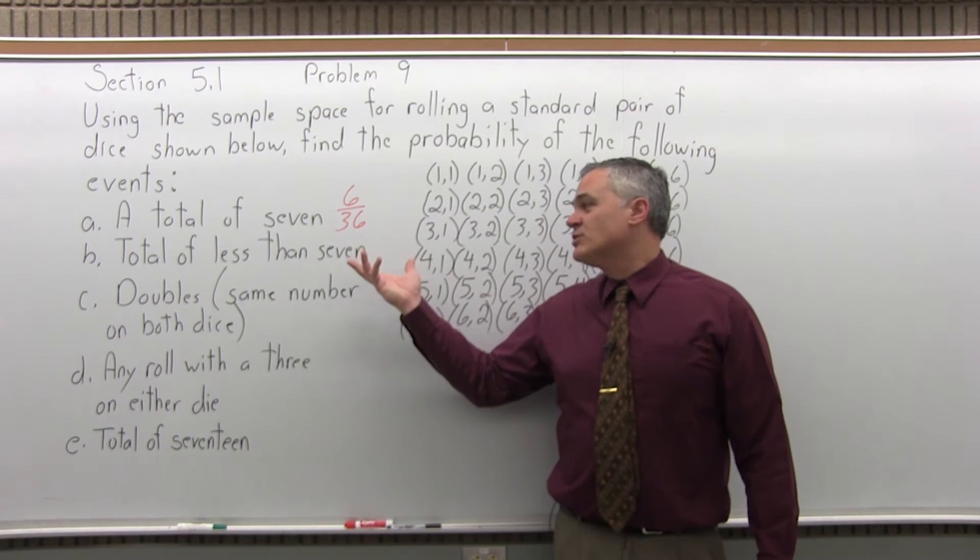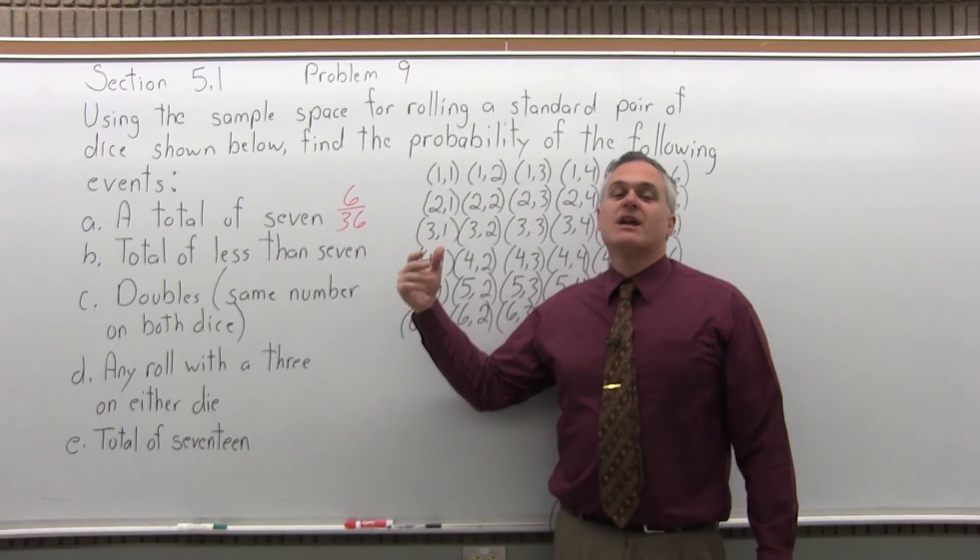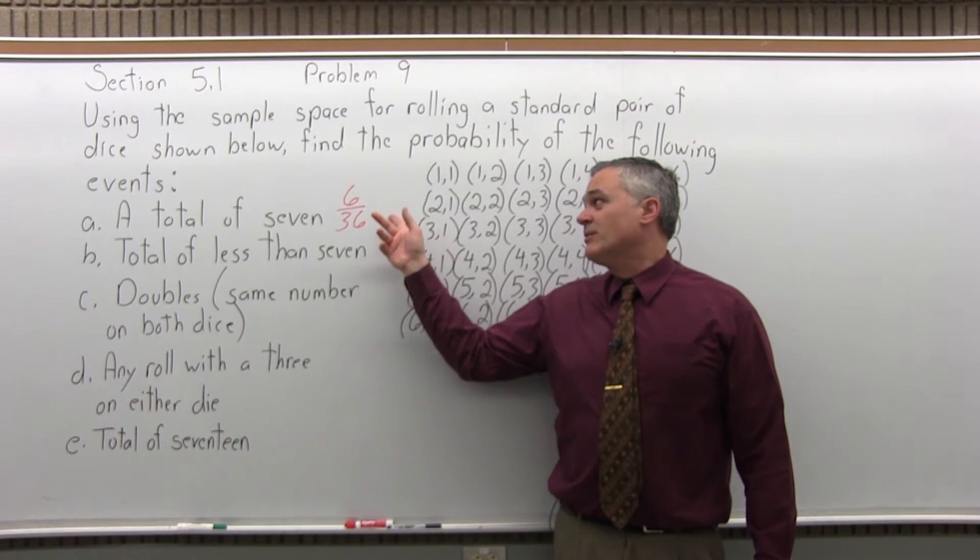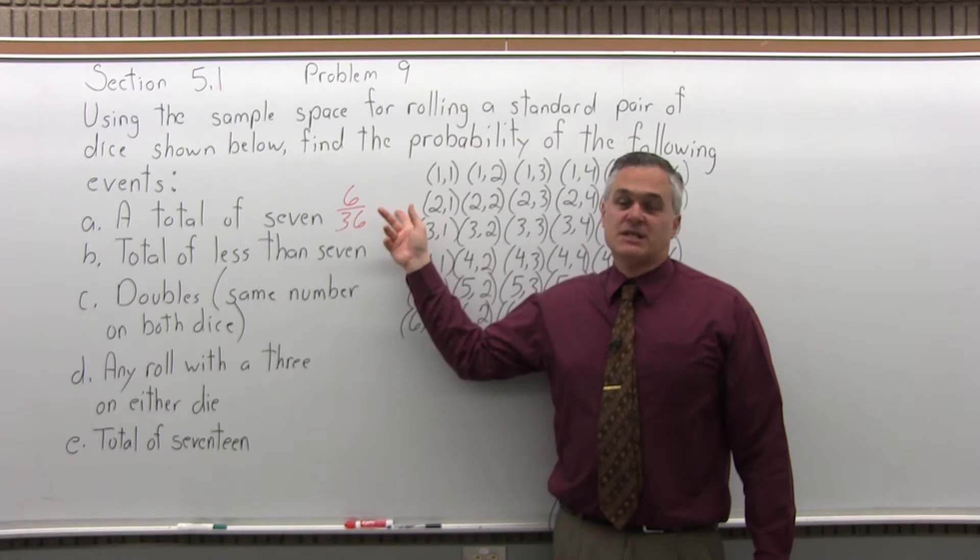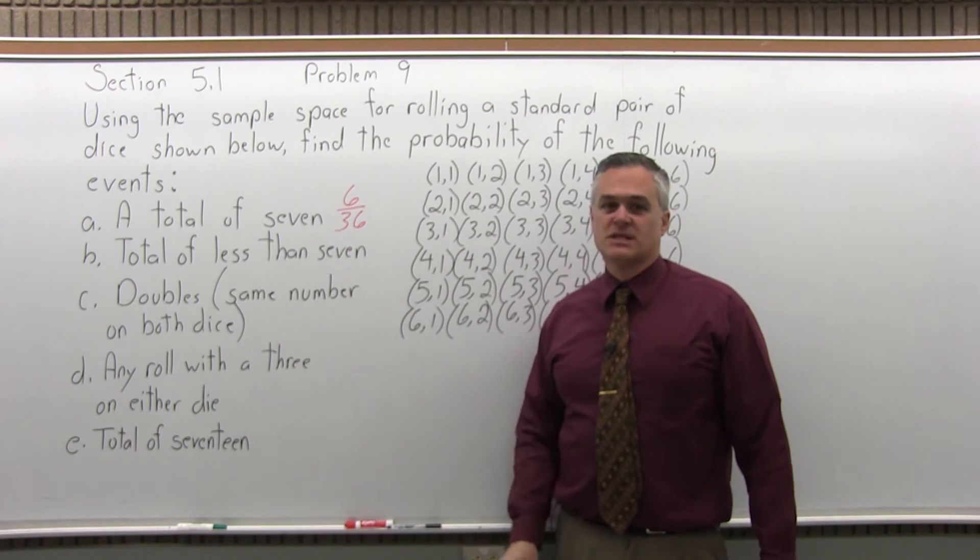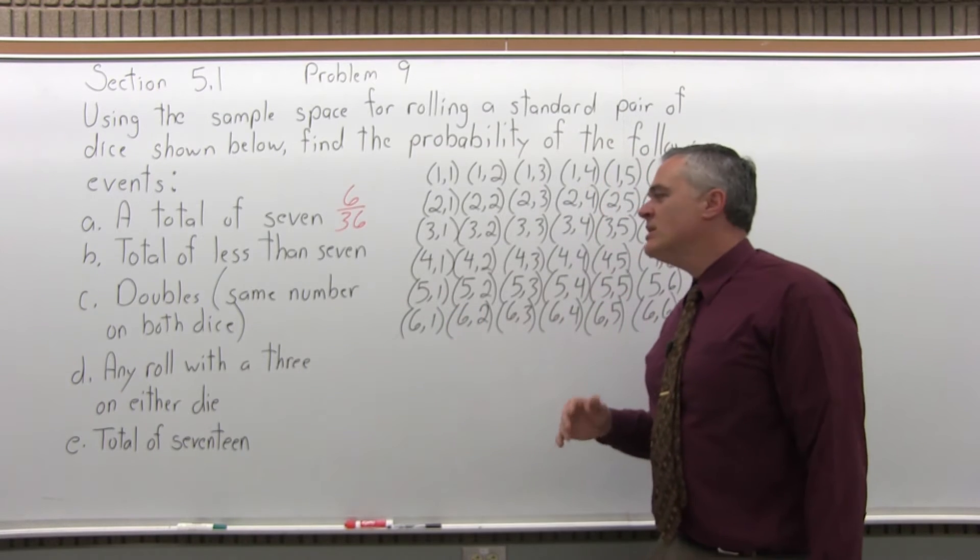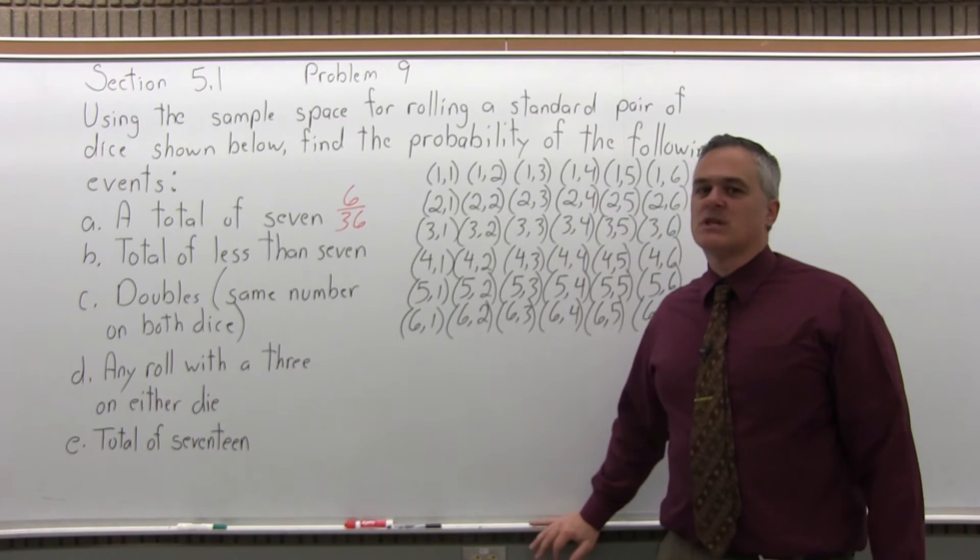And again, that 6 over 36 can be reduced to 1 over 6. It can be turned into a decimal by dividing 1 divided by 6 or 6 divided by 36, same result. It will be 0.1666666, well, between 16 and 17 percent probability.